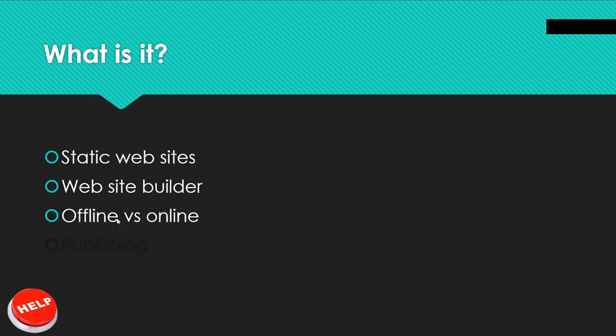Everything that you build is built on your computer, and the online is just for the final result where you don't even need to check too much. Publishing is just a portion of what you do — instead of pushing save on everything, you get to make many changes and push them all at once. For other websites, you need staging and production environments and A/B testing plugins — here it's all solved.